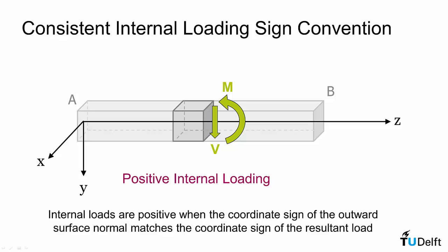On the left face, it's actually the opposite. Our outward normal is in the negative direction, therefore a positive shear force has to be in the negative direction and a positive moment has to be in the negative x direction. Because a negative times a negative gives you your positive.